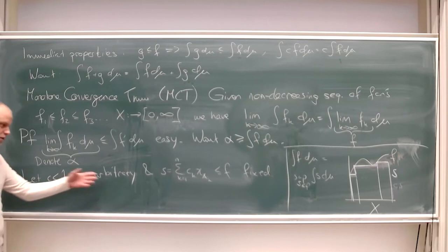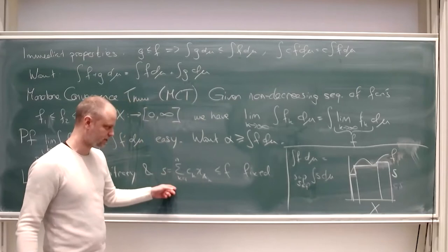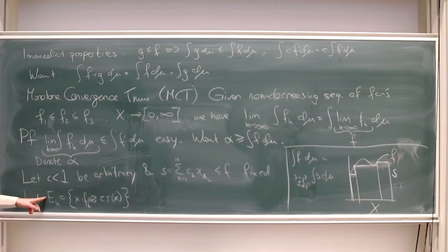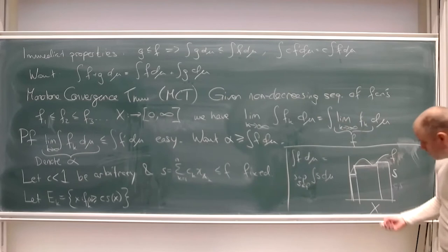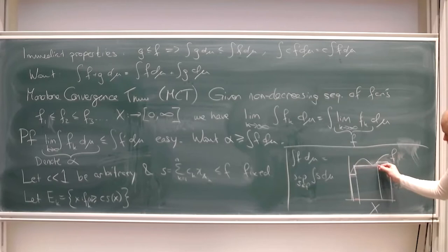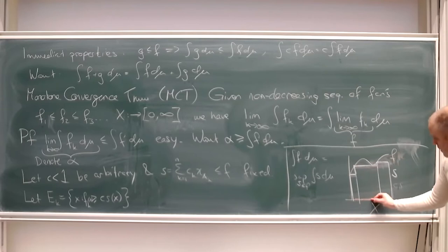Fix c < 1 and a simple function s ≤ f. Define the set E_k = {x : f_k(x) > c·s(x)}. For example, looking at f1, it goes above the c·s curve in certain regions — those regions form E_1. Two important properties of the E_k's: first, E_k increases with k in the set-inclusion sense.